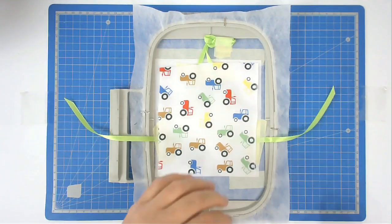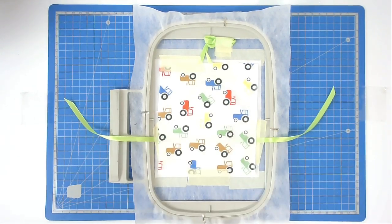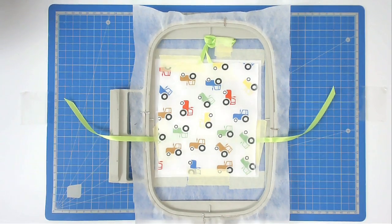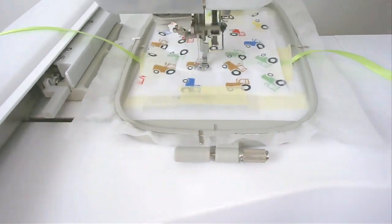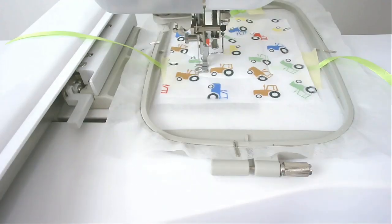Tape that in place too. You can now pop that into your machine and stitch round number three, and that's going to secure both fabrics. If you're going to add the stripe fabric across Tony's t-shirt, then you're now going to stitch color number four, and that's going to give you your placement outline.